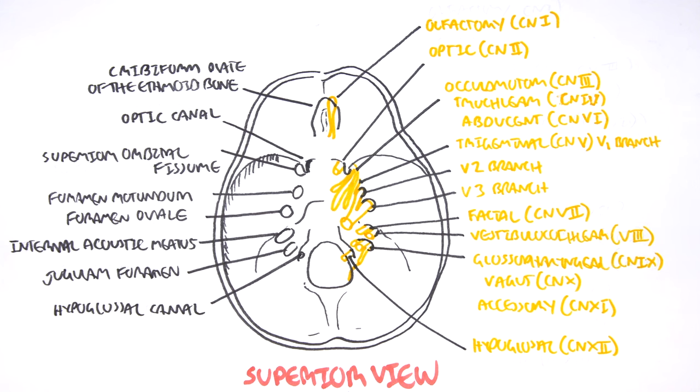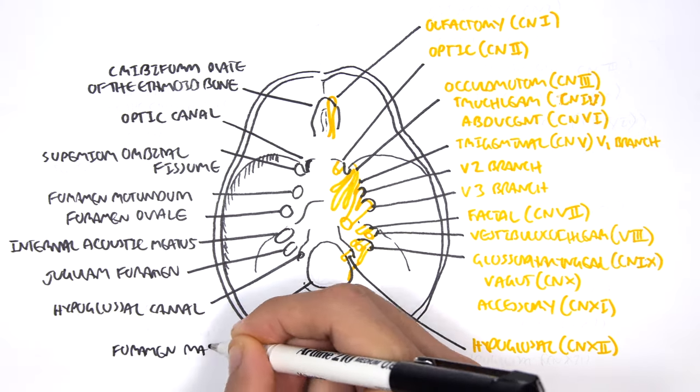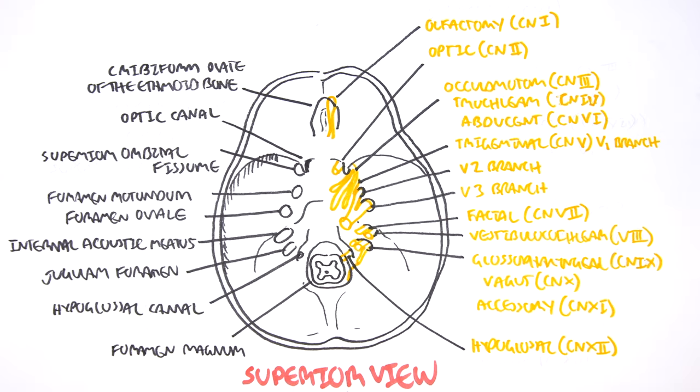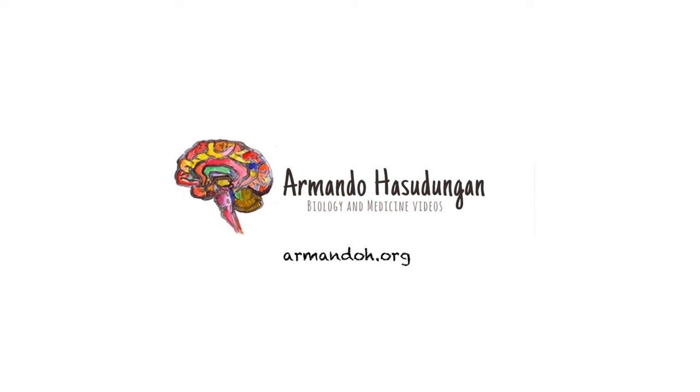Just to finish everything off, this big hole here, this is your foramen magnum. This is where essentially the brainstem spinal cord passes through. Interestingly enough, your spinal accessory nerve actually loops down through this foramen magnum before exiting back up at that jugular foramen. So the spinal accessory nerve is an exception in terms of how it exits the skull.